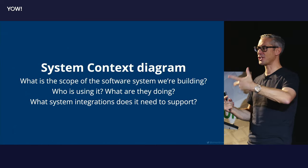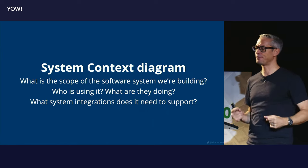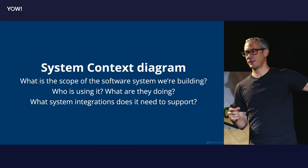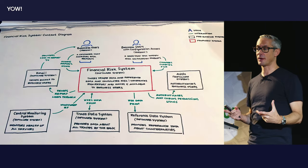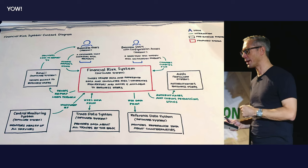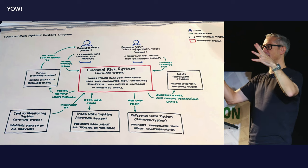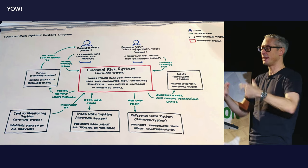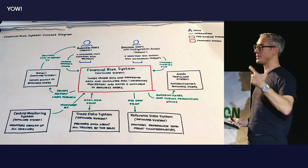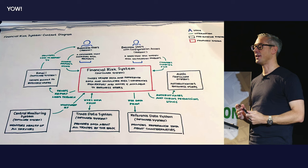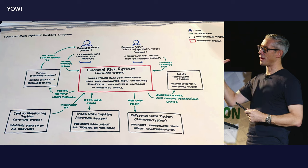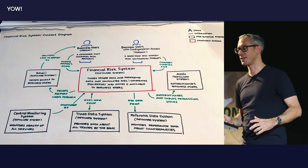What features sit inside the system boundary and what features sit outside in other systems? Who is using this system — the roles, actors, users, personas? What sort of things are they doing? And what system integration points do we need to support? If you can answer those questions, you can draft up a system context diagram. This is a system context diagram from one of the workshops I ran. The red box represents the software system being designed — the financial risk system. This group correctly identified a couple of different types of users and a bunch of external integration points — those are the black boxes.